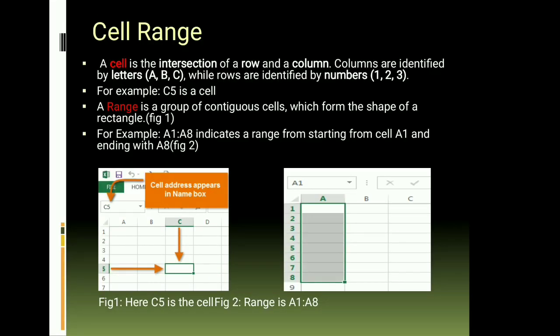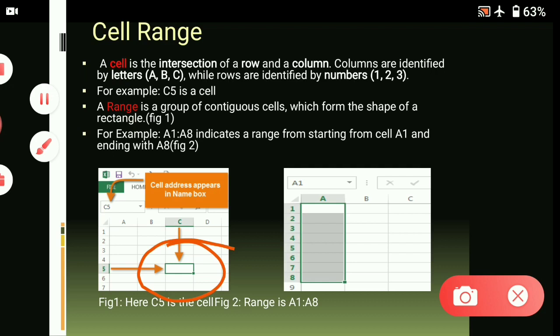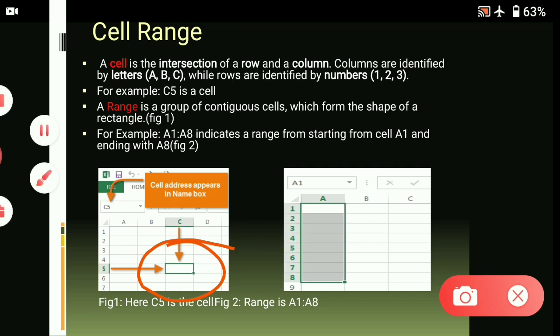Moving to our next heading, that is cell range. A cell is the intersection of rows and columns. As you can see in the example, C5 is the cell address. Columns are identified by letters and rows are identified by numbers — like A, B, C are the column letters, and 1, 2, 3, 4 represent the rows. To write the cell name, first you write the column alphabet, then the row number — so that is how you write the cell name, like C5.